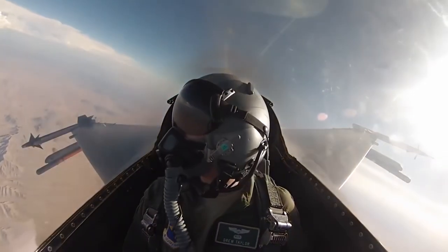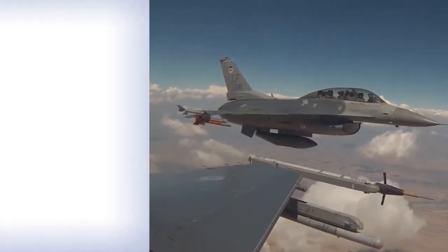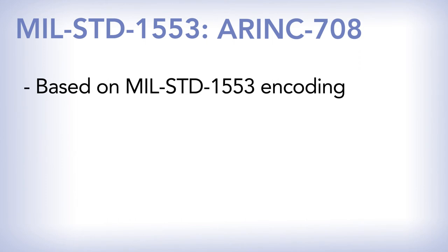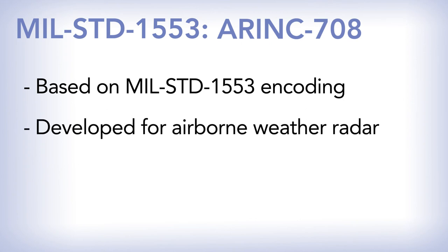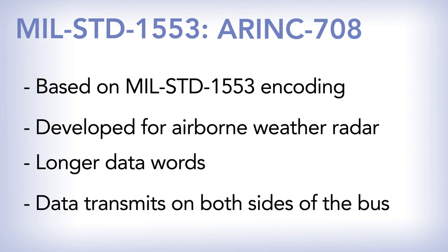One of the most popular variations of MIL-STD-1553 is ARINC-708. ARINC-708 is based on the same physical lines and encoding as MIL-STD-1553, but is used for weather radar. The length of the data words is the primary difference between the two — messages in ARINC-708 are much longer given the amount of information a radar image may have, and it also allows data to transmit on both sides of the bus at the same time.